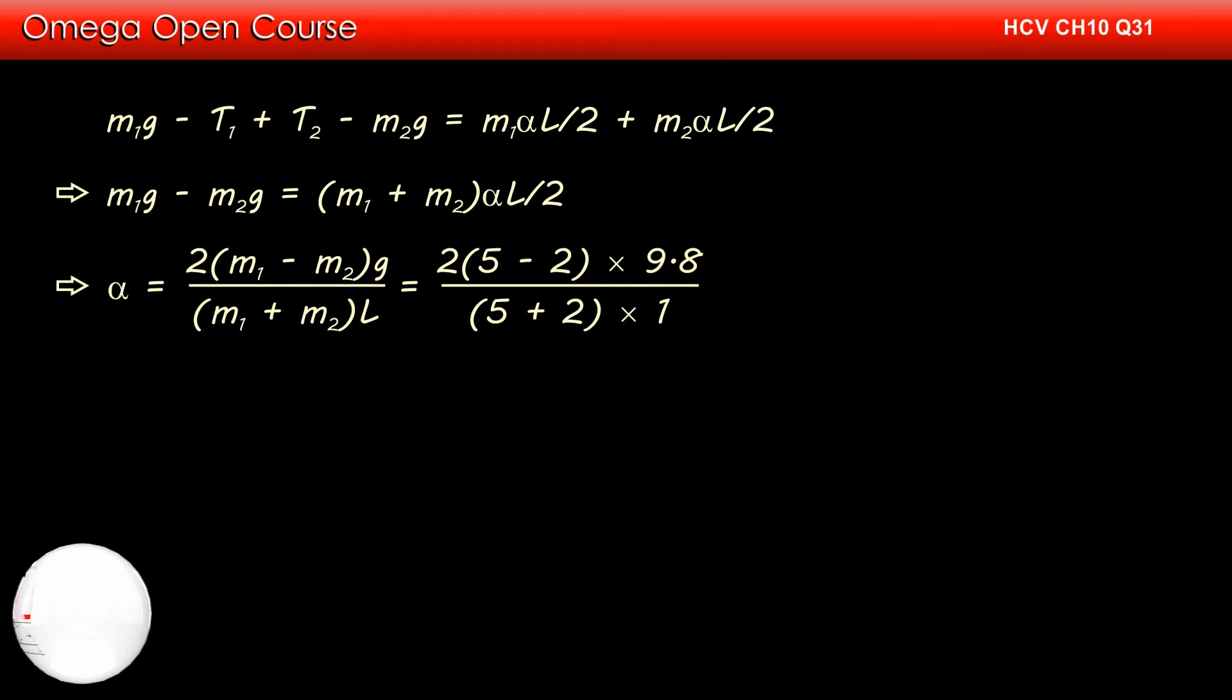Putting the values of m1, m2, g, and l, we get alpha equals 2 times 5 minus 2 times 9.8 divided by 5 plus 2 times 1. Simplifying, we get 8.4 radians per second squared. This is our answer.